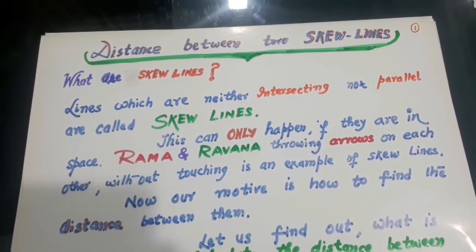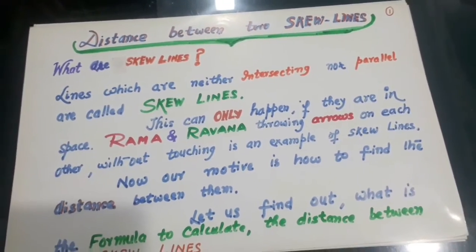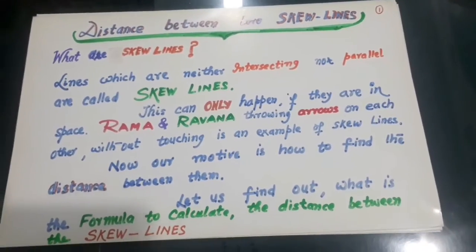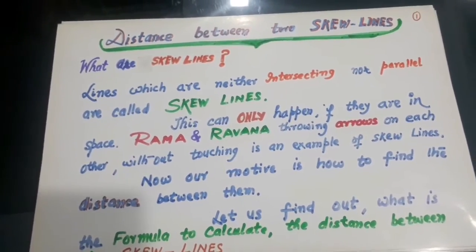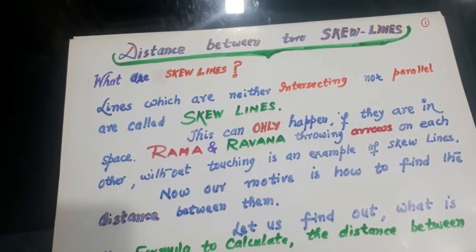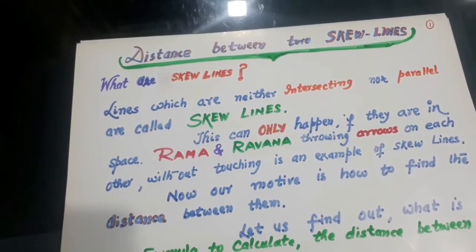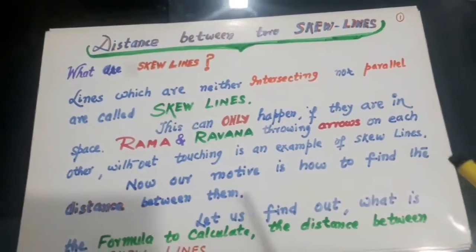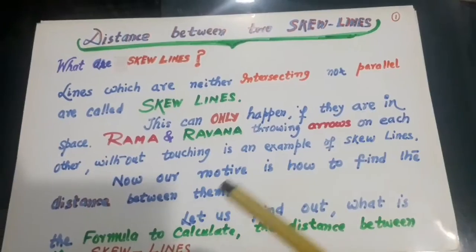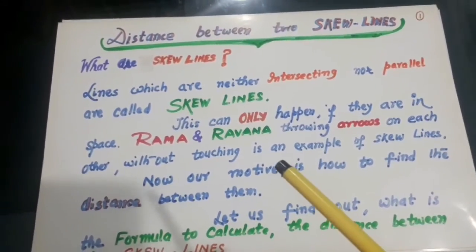Now, this can only happen if they are in space. Let us take the case of episodes on Rama and Ravana. They are throwing arrows on each other without touching, which is an example of skew lines.